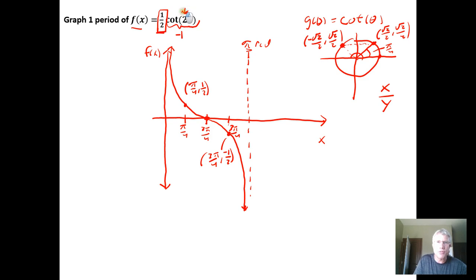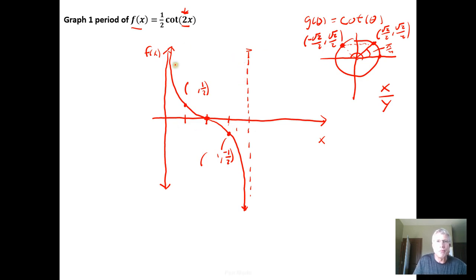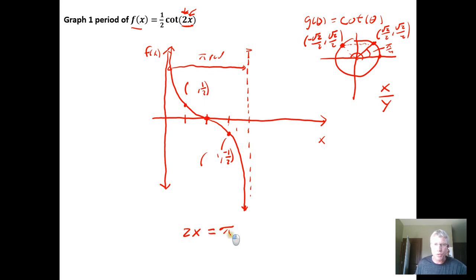The factor of 2 inside the function horizontally compresses it by changing the period — it changes the angles at which things happen. Normally the distance between the two vertical asymptotes is pi radians. We ask: what value of x do we plug in to get pi radians? That is, 2 times what value of x equals pi? Dividing both sides by 2, we get x = π/2. So this vertical asymptote moves from π to π/2. You can verify by plugging π/2 in and confirming it generates pi radians.